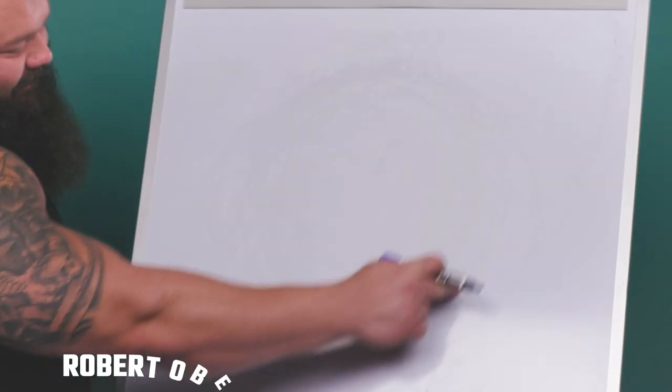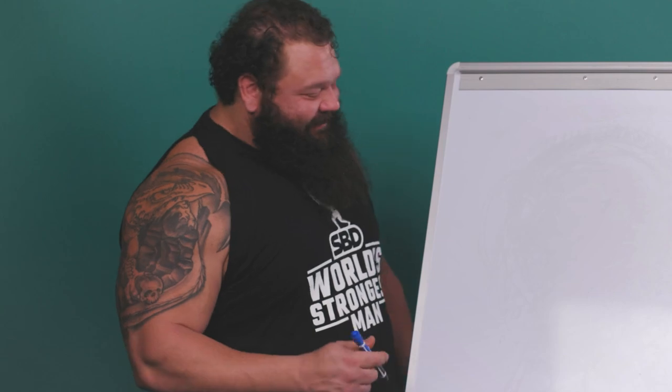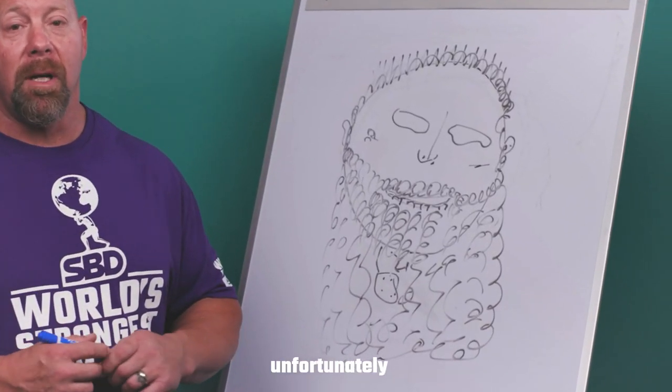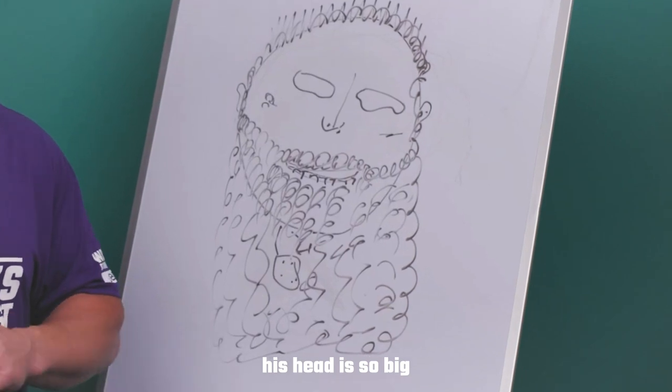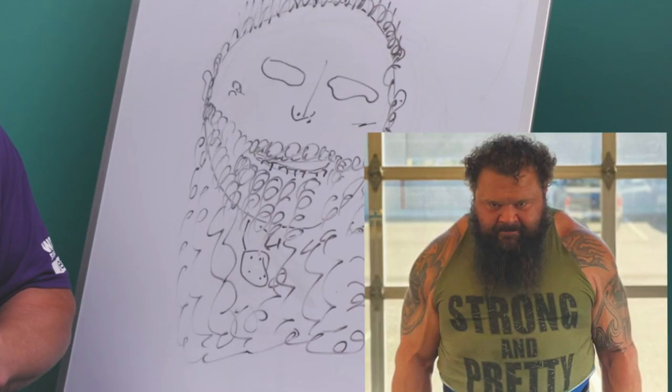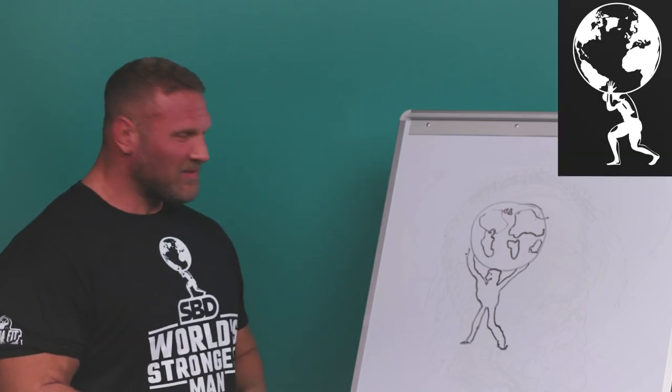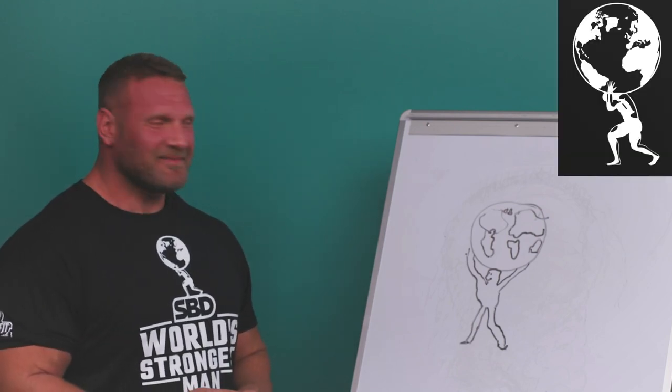You see here? I could tell somebody drew my head. That's my head right there. I know it. And this is the picture of Robert Oberst. Unfortunately, his head is so big that it is blocking the event. There you go. Beautiful. What do you think of that? Good.